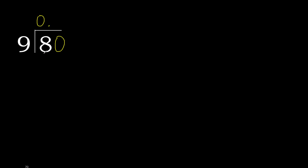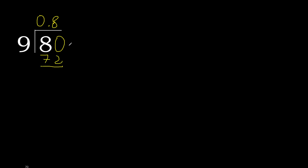80 is not less, therefore work with 80. 9 multiplied by which number is nearest to 80 but not greater? 9 multiplied by 9 is greater, so multiplied by 8: 72 is not greater. 80 minus 72 is 8.